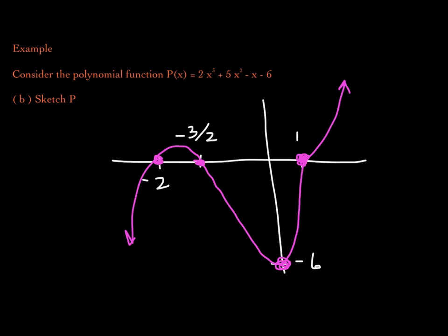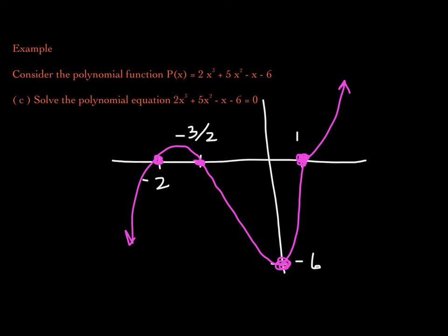The last thing we're asked to do is solve the polynomial equation 2x³ + 5x² − x − 6 = 0. Basically, they took our function, set it equal to 0, and asked us to solve. But we already did this work. In part A we found that the zeros of function p are negative 2, negative 3/2, and 1. Because the zeros of p are the solutions to the polynomial equation, the solution set is {−2, −3/2, 1}.